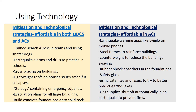Windows can be made shatterproof. Gas supplies can be designed to automatically shut off in the event of an earthquake, preventing fires. In many advanced countries the gas pipes themselves are designed to flex in an earthquake so that the pipes don't get damaged.